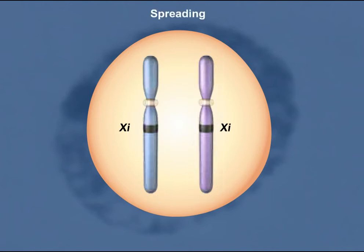Spreading is the process of compacting and inactivating the X chromosome. A gene designated XIST within the X-inactivation center encodes an RNA that coats the X chromosome and promotes compaction.